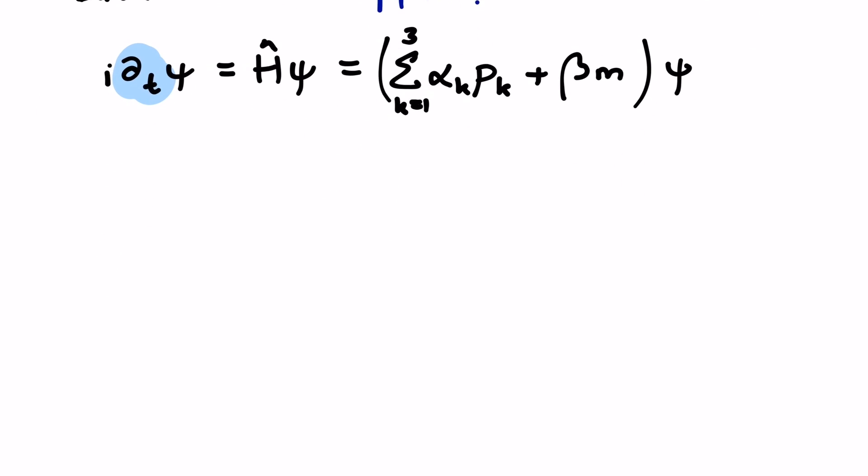This means we have to find out the coefficients alpha 1, alpha 2, alpha 3 and beta. Our condition that this is a relativistic energy-momentum relation is that if we apply the Hamiltonian equation twice, it should yield p squared plus m squared, or in terms of indices, pi pi plus m squared.